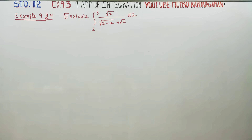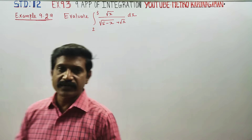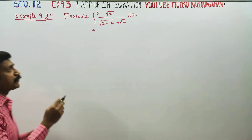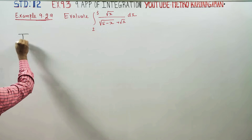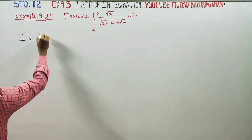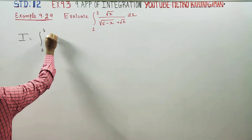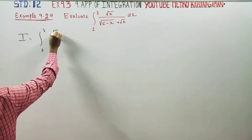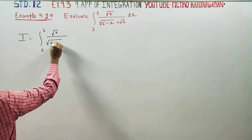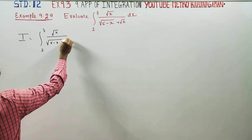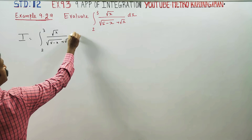Hello to all standard students, I am Metro Karnagaran. In example 9.29, you have to evaluate this. I am going to just name this integral as I. I is equal to the integral from 2 to 3 of root x divided by root of 5 minus x plus root x, dx.